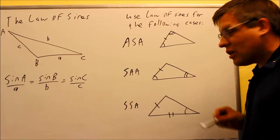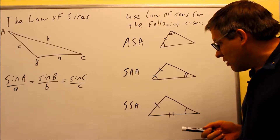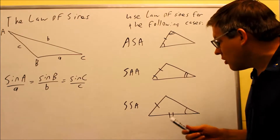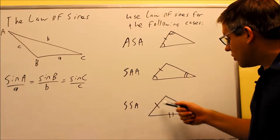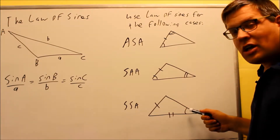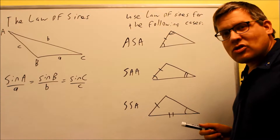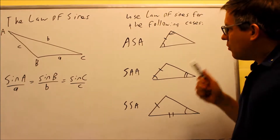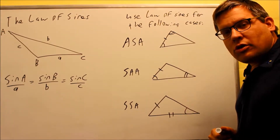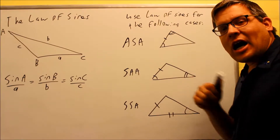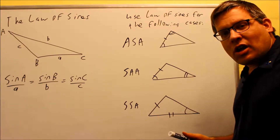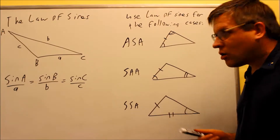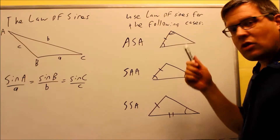The last case is side-side-angle, or angle-side-side — every way you want to look at it. This one you have two sides and a given angle. So all these are cases where you can use the Law of Sines. Primarily, the time you want to use it is when you have a side opposite a given angle.